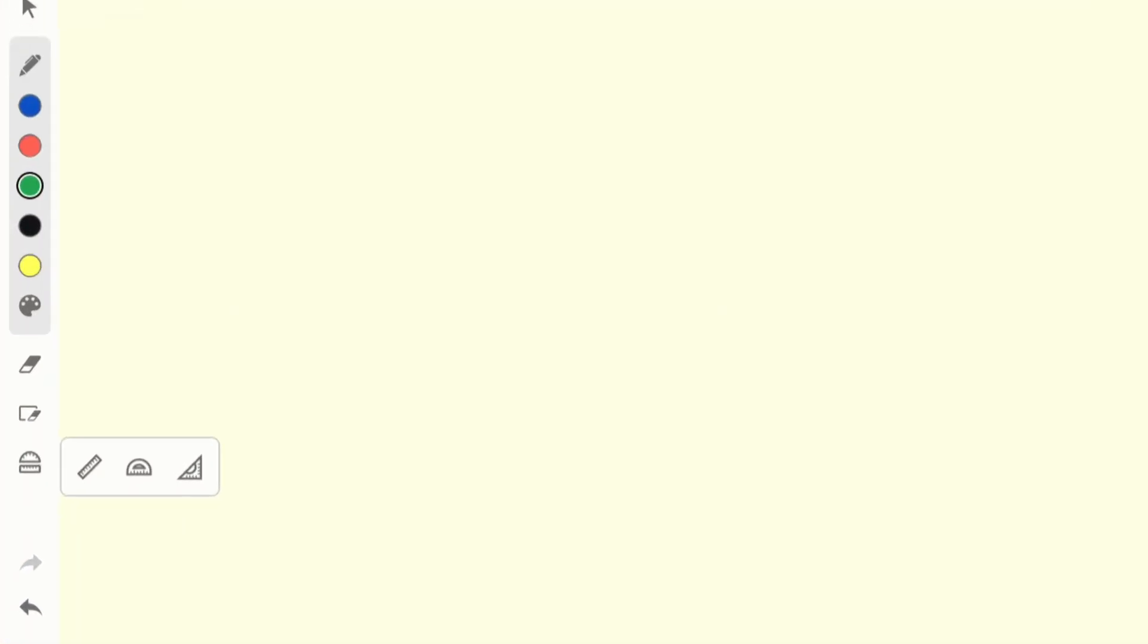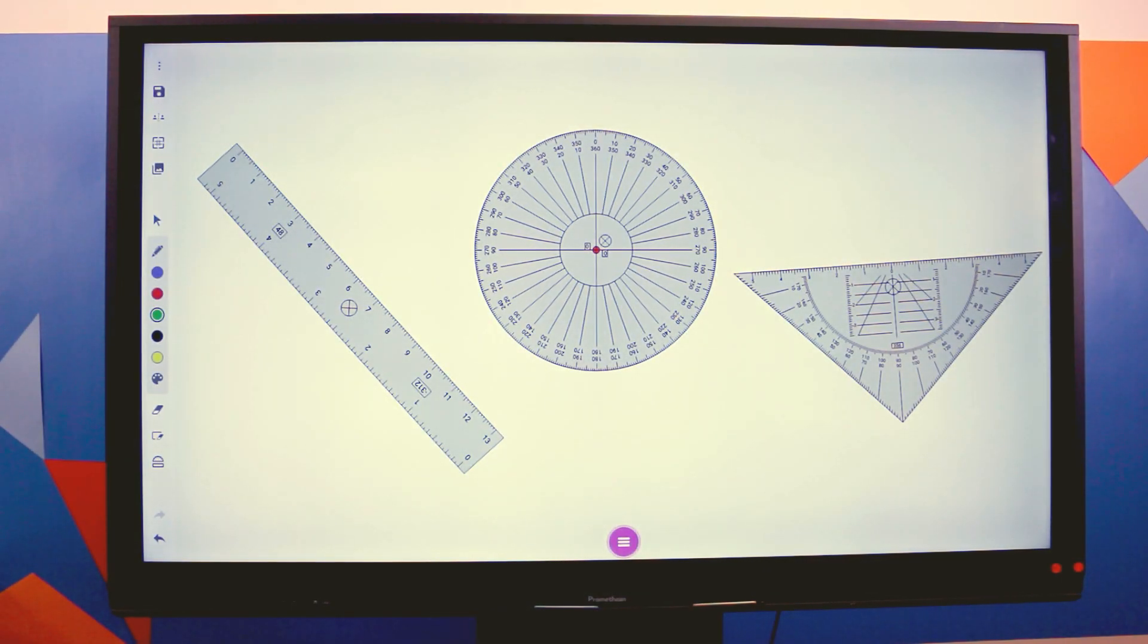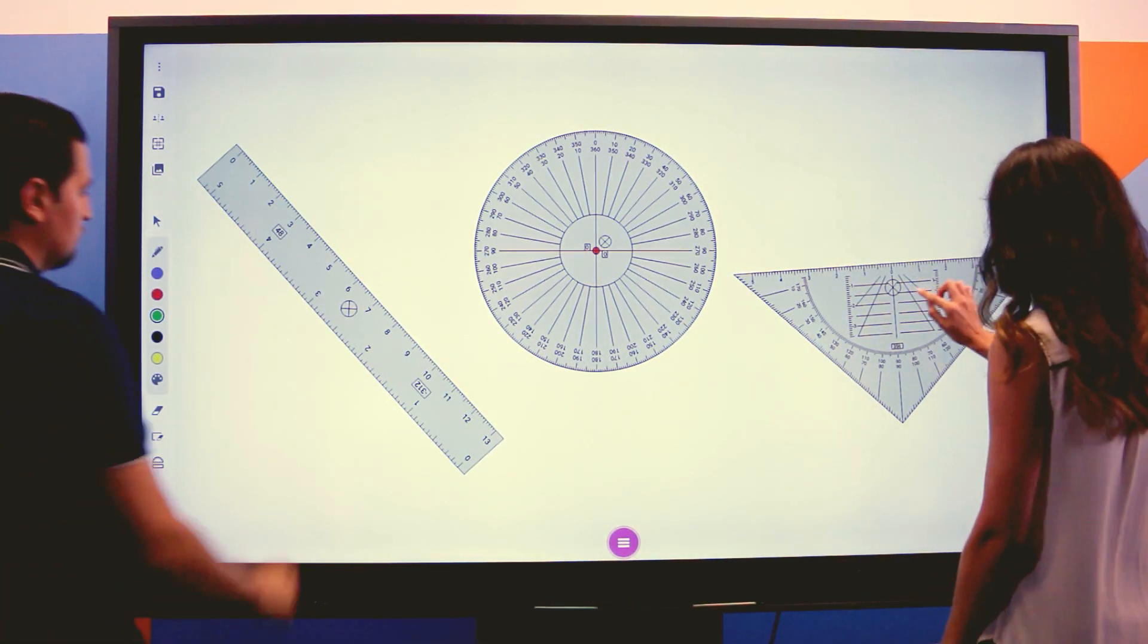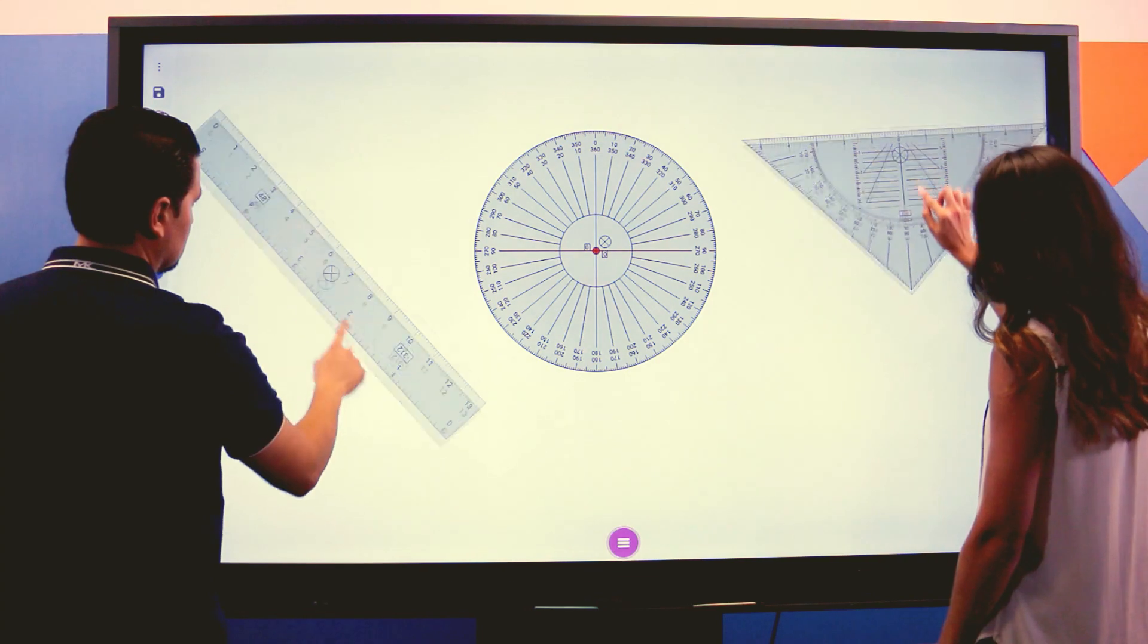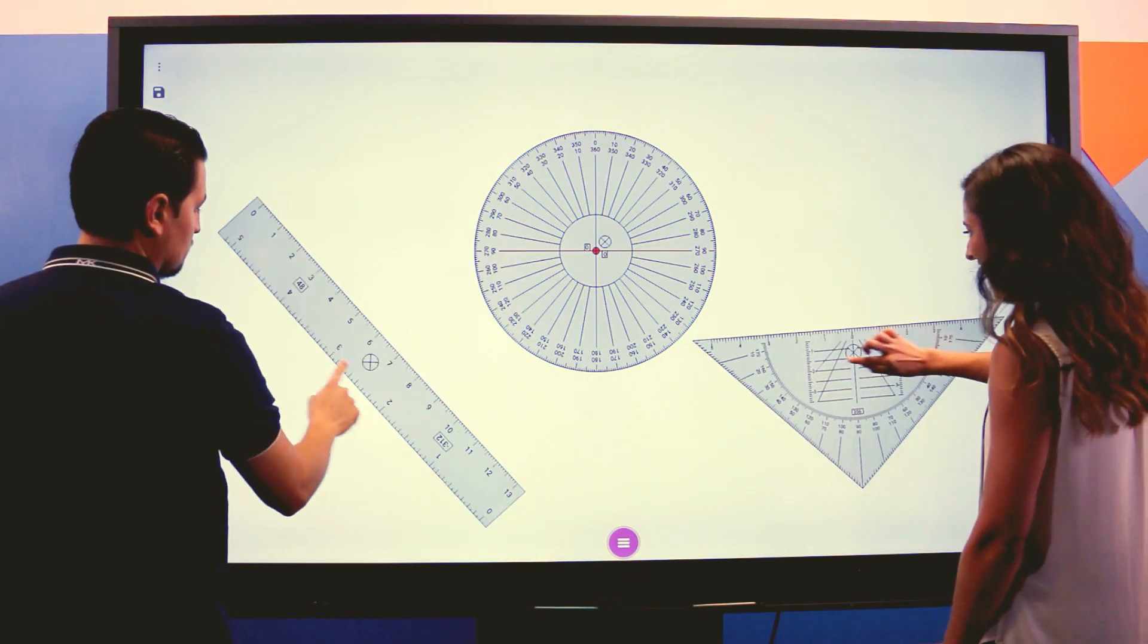You will find a ruler, protractor, and a set square in the math tools menu. As the app is designed to support a multi-user environment, you can have multiple instances of each tool on the canvas at the same time.